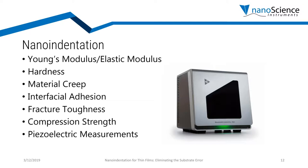With nano indentation, you can measure many different kinds of properties, such as Young's modulus, hardness, material creep, interfacial adhesion, and fracture toughness. All these properties are needed when you are trying to develop a new product, develop a new material, or design something based on those. These properties are crucial to be able to do those steps.